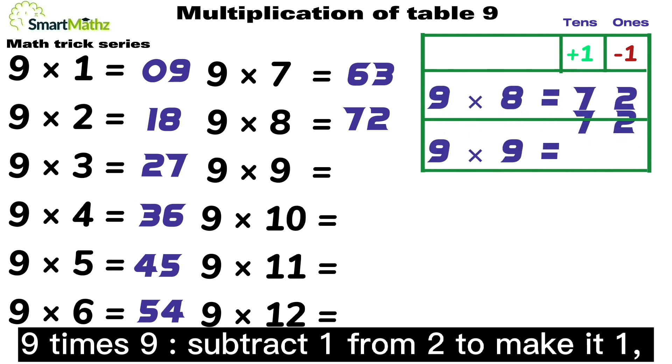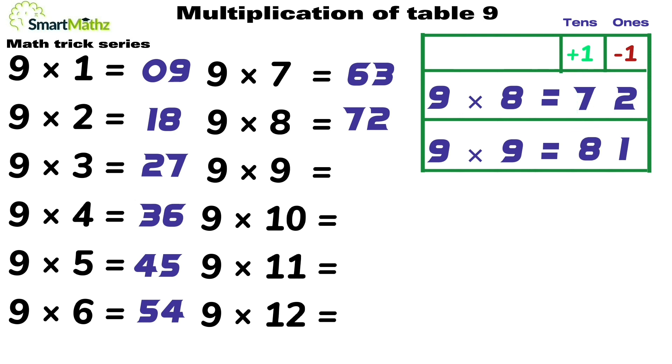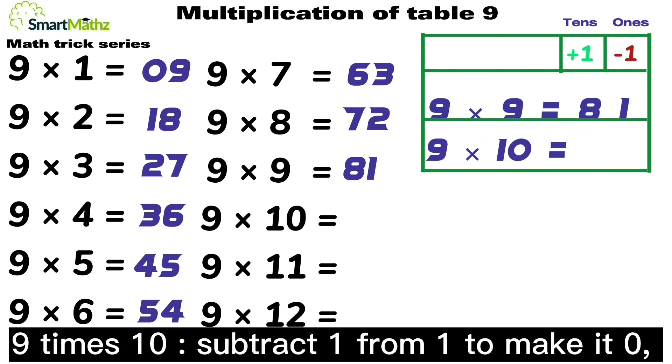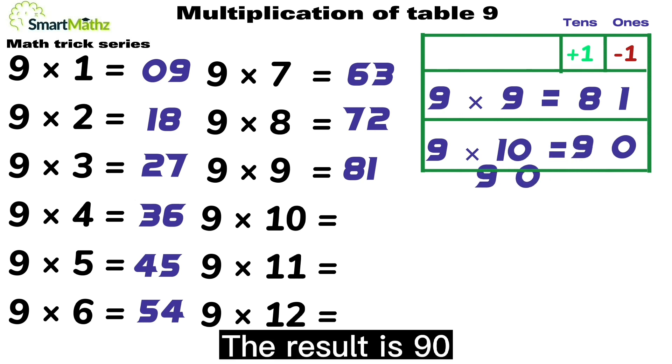9 times 9, subtract 1 from 2 to make it 1, and add 1 to 7 to make it 8, which equals 81. 9 times 10, subtract 1 from 1 to make it 0, and add 1 to 8 to make it 9. The result is 90.